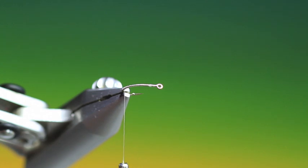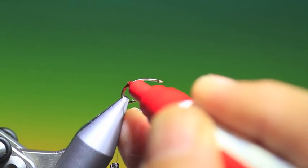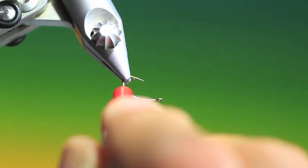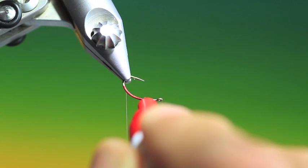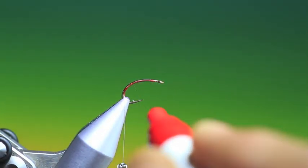Then we take whatever color you want to use for the body, but I'm using red here. So we just mark the body with a red waterproof marker. Let's do the underside. There we are.